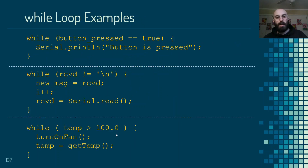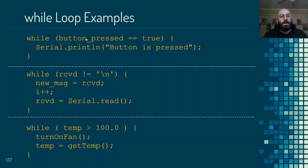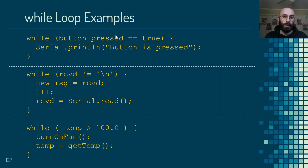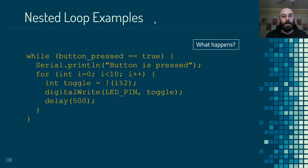Going back to the earlier example — while a variable called buttonPressed equals true, print that the button is pressed — this is also an infinite loop because the variable is never updated inside the loop. We would need an additional statement inside the loop, like a digitalRead on that button, to update the variable and check whether it's no longer true.